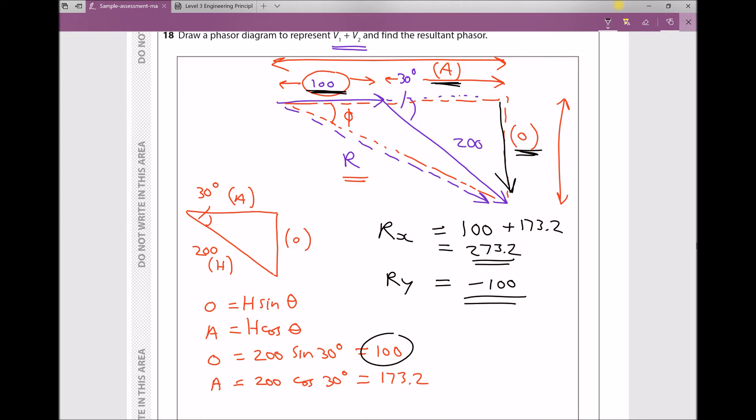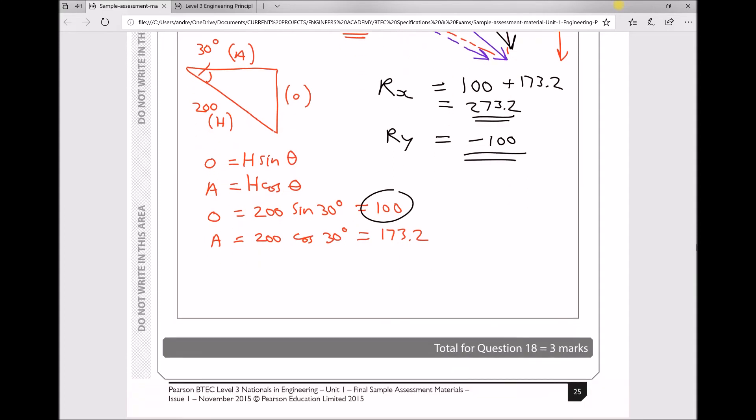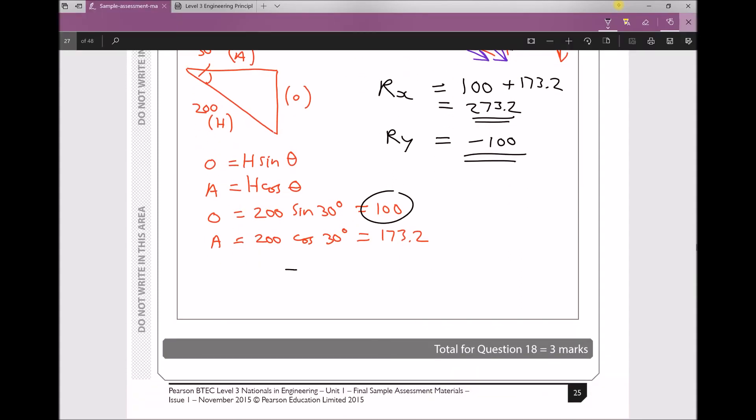Next, I'll redraw the triangle for R. We have an x component of 273.2 and a y component of 100 acting downwards. We need to find the magnitude of the resultant and the angle θ.